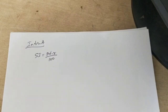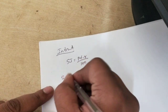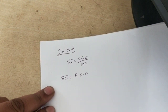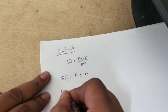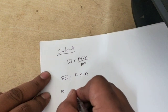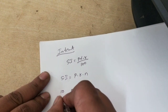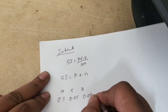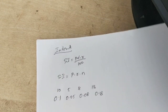We are going to change the formula to SI = P × r × n, where P is the principal and r is the rate of interest. Whenever the rate is given as a percentage — say 10%, 5%, or 8% — we divide by 100: 10% becomes 0.1, 5% becomes 0.05, 8% becomes 0.08, and 18% becomes 0.18.